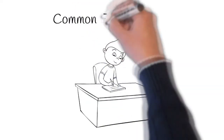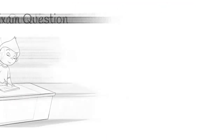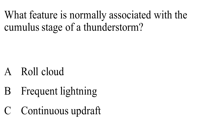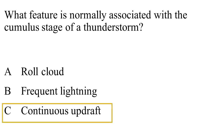Here are a couple of questions you might see on your exam. What feature is normally associated with the cumulus stage of a thunderstorm? A. Roll cloud. B. Frequent lightning. C. Continuous updraft. The answer is C: continuous updraft.